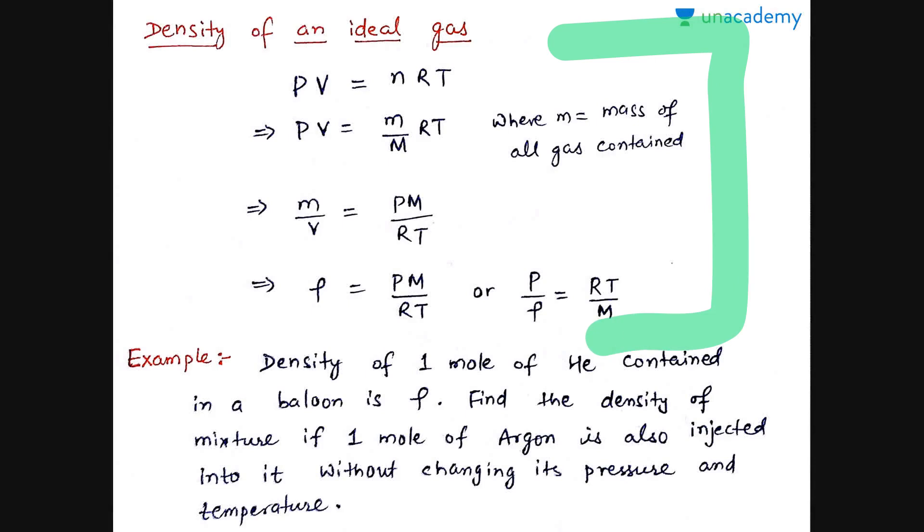Now let's do one more thing on ideal gas equation. This is a numerical problem. You have a gas which has pressure P, temperature T, and density rho. Now, you know PV = nRT where n is the number of moles. And the number of moles will be total mass of gas divided by molar mass of gas. Now, total mass by total volume is density, right? So total mass by total volume will become PM by RT. So for any ideal gas, the density is pressure times molar mass in SI units divided by R times temperature in kelvins. And here you can also note that P by rho will be RT by M.